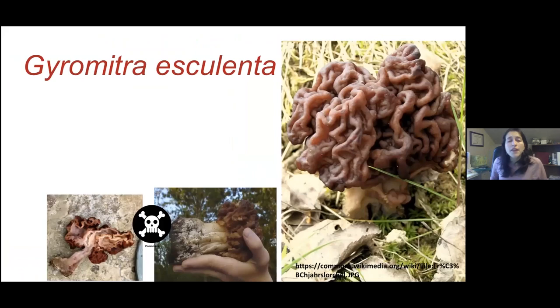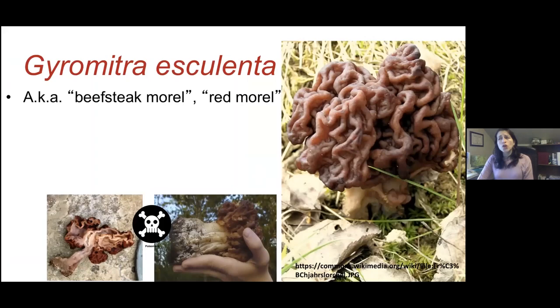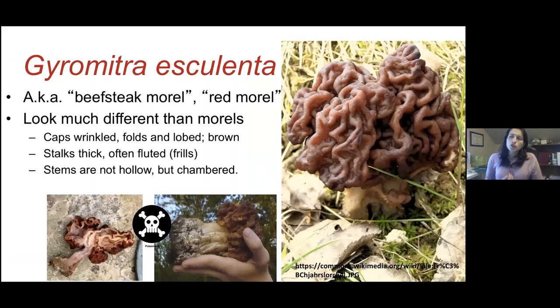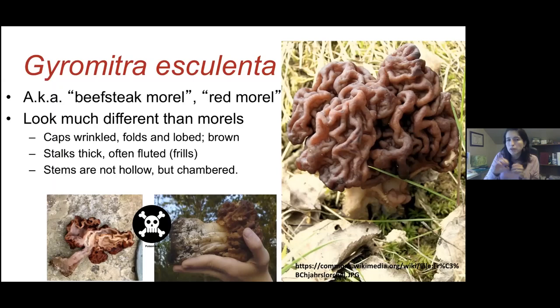Now let's talk about the other genus of false morels: Gyromitra. Starting with Gyromitra esculenta, known as the beefsteak morel or red morel. It looks quite different from true morels — those caps are wrinkled, more like folding or lobes. They tend to be brown to red, the stalks are thicker, often with frills or fluted edges. And the stems are not hollow — instead they are chambered.